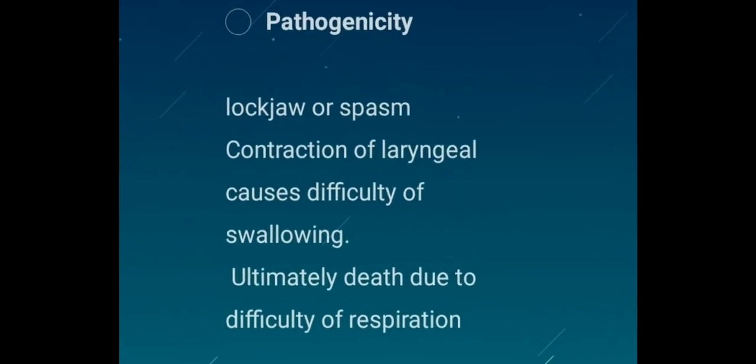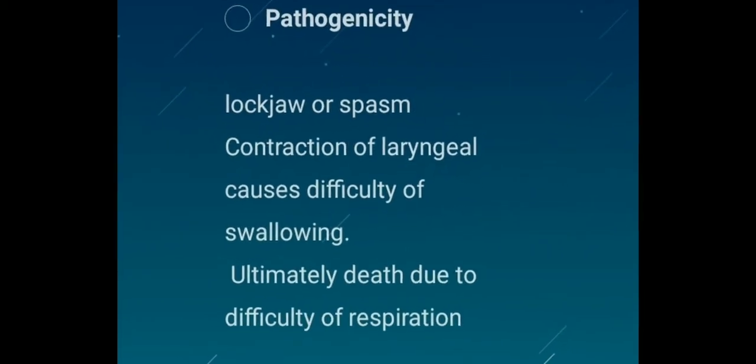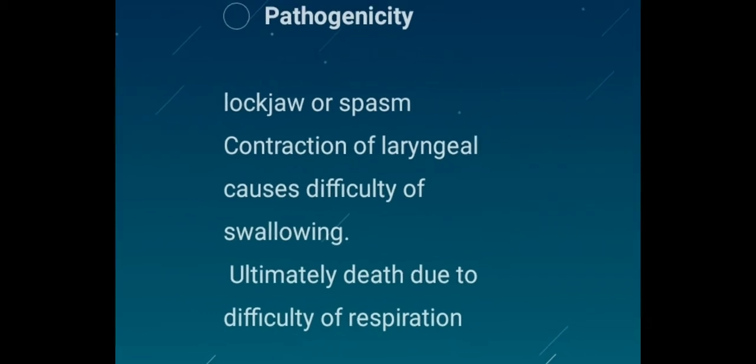Pathogenicity: Clostridium tetani affects humans by causing the disease called tetanus. The spores enter the host through open wounds, lacerations, or burns where many cells are dead. This provides the necessary anaerobic environment for Clostridium tetani to begin to spread in the human body, where the spores can germinate and produce toxins that are harmful to the human nervous system.